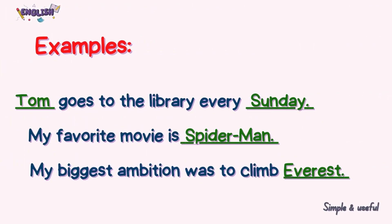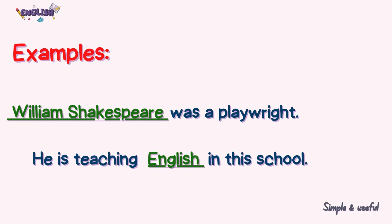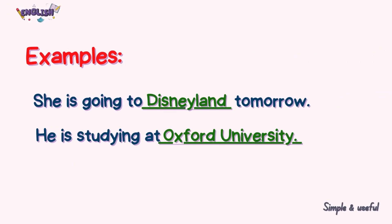For example: 'Tom goes to the library every Sunday.' Tom and Sunday are both nouns. 'My favorite movie is Spider-Man.' Spider-Man is a noun. 'My biggest ambition was to climb Everest.' Everest is a noun. 'William Shakespeare was a playwright.' William Shakespeare is a noun. 'He is teaching English.' English is a noun. 'She is going to Disneyland tomorrow.' Disneyland is a noun. 'He is studying at Oxford University.' Oxford is a noun.